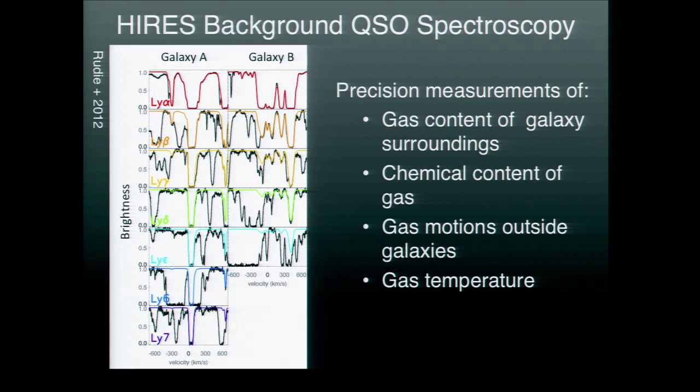To look at the quasars, we use another instrument on Keck, the Hi-Res instrument. With this data we can get very precise measurements of the content of gas surrounding these galaxies, as well as the chemical composition of that gas — if we see elements like carbon and oxygen, we know it had to have come out of a galaxy where stars were forming. We can see the motions of gas surrounding these galaxies, including gas falling in that will form a future generation of stars and gas coming out, as well as the temperature of the gas, which helps us understand what physical mechanisms cause this gas to be expelled.